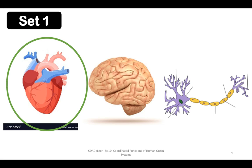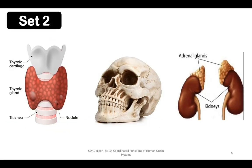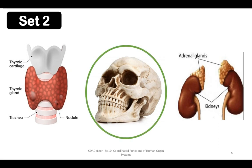Now let's go to set number two. We have thyroid gland, skull, and kidneys. Which organ does not belong to the group? The answer is skull, because it belongs to the skeletal system.